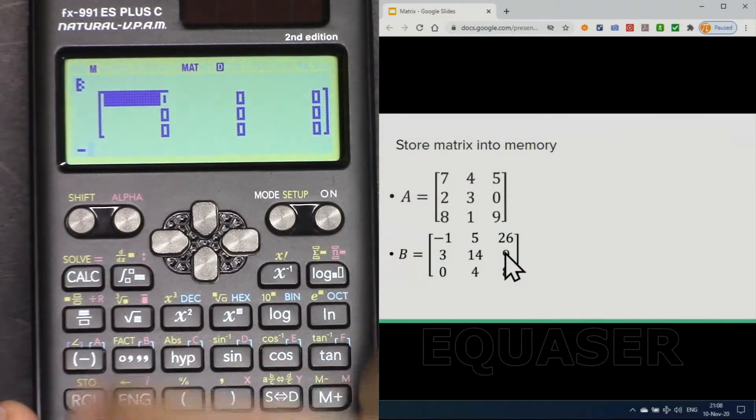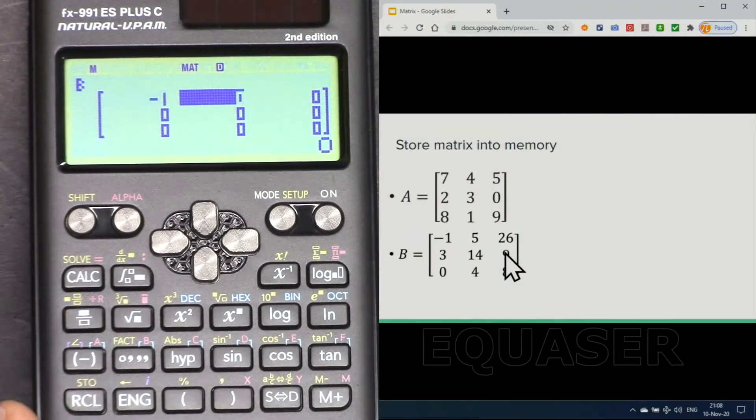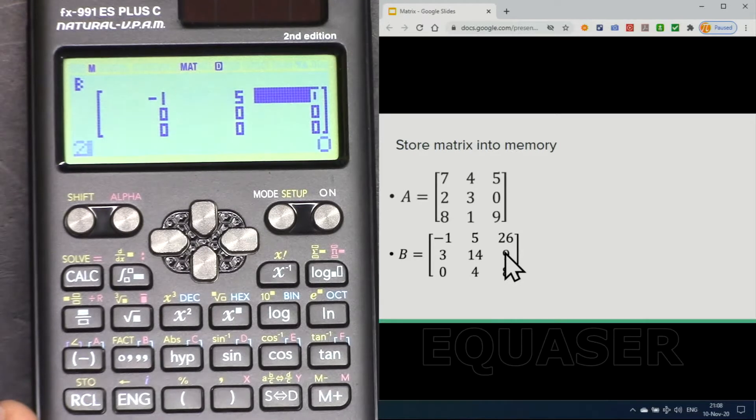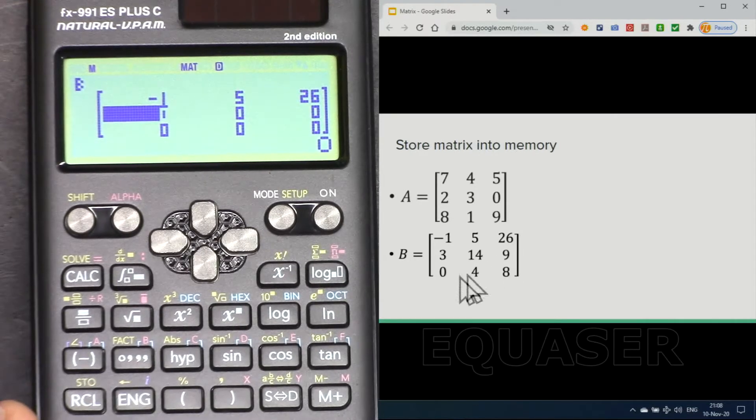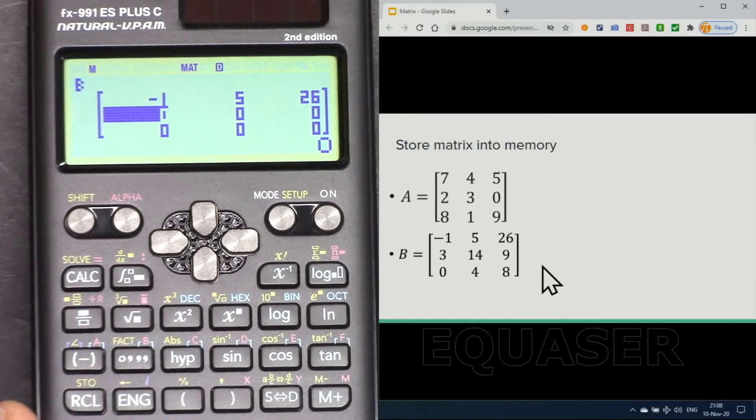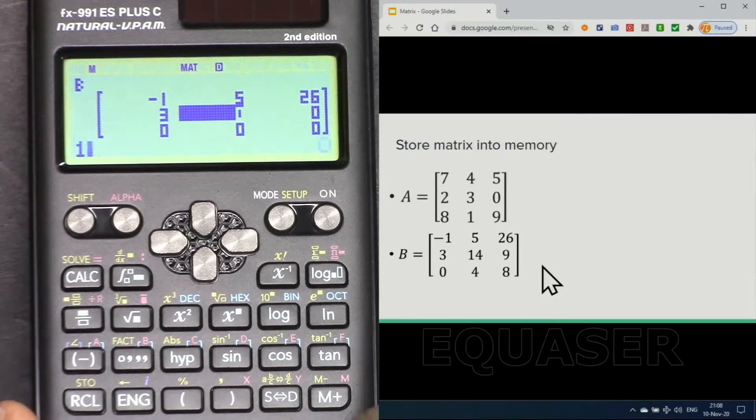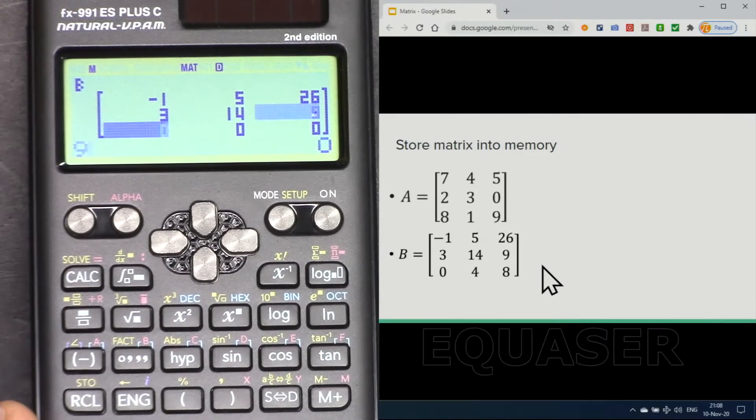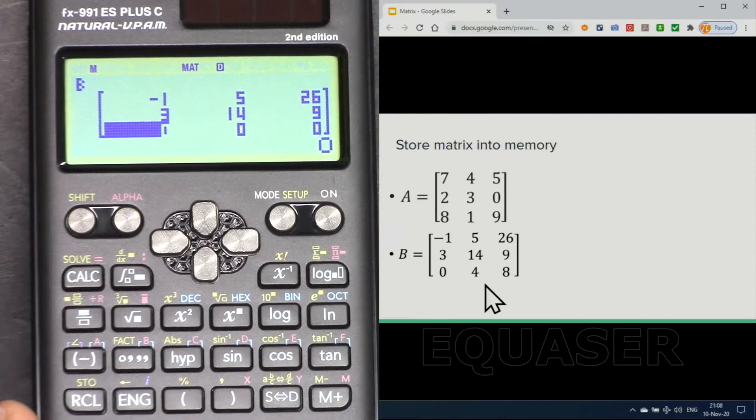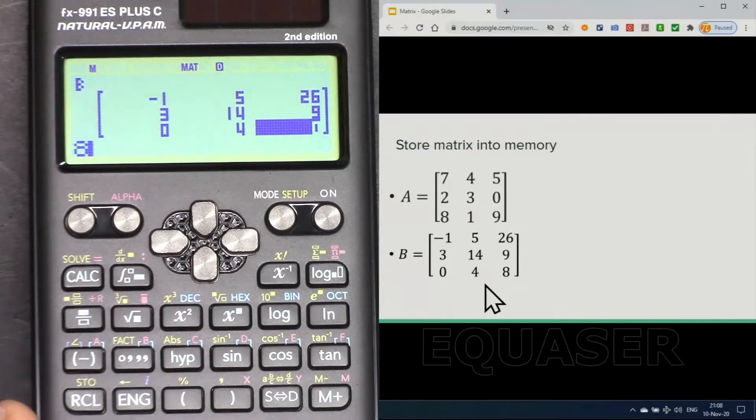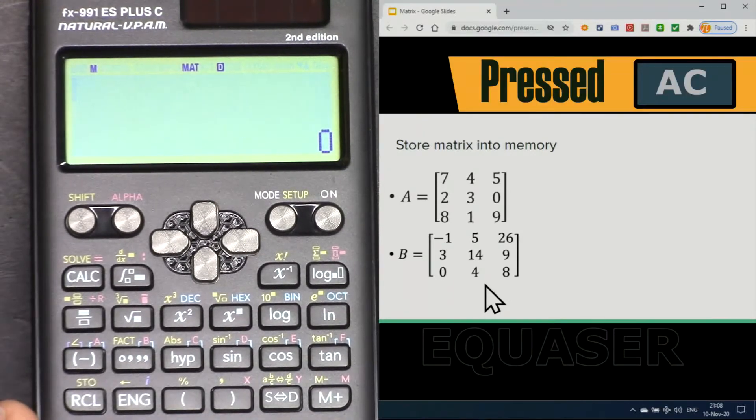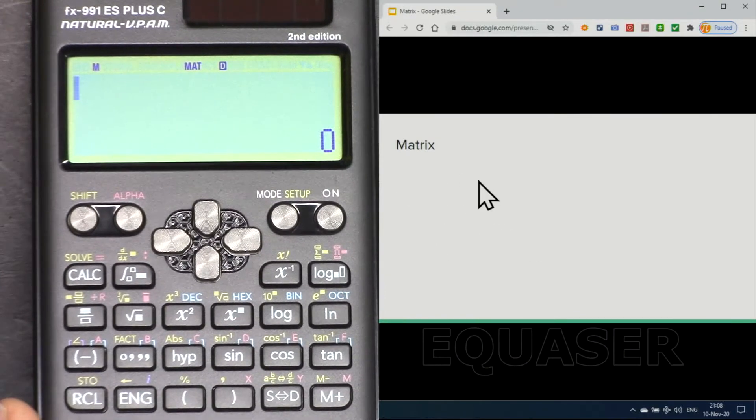Here 6, minus 4, minus 1 equal, 5 equal, 26 and then equal. 3, 14, 9: 3 equal, 14 equal, 9 and then equal. 0, 4, 8: 0, 4, and 8. And press all clear, do not worry.